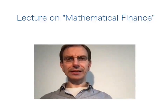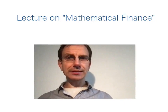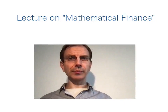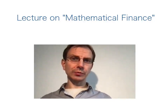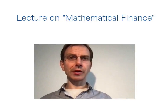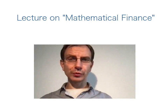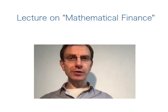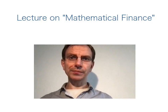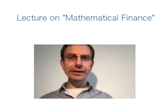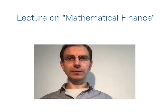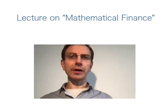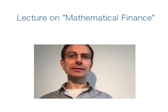Welcome to the lecture on Mathematical Finance. After we have discussed in detail the optimal stopping problem, I would like to address now the question of how to hedge American contingent claims. The main goal will be to prove a theorem which states that in an arbitrage-free financial market model, completeness is equivalent to the fact that every American contingent claim is attainable.